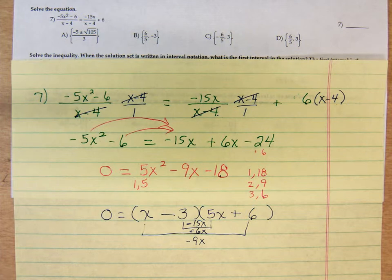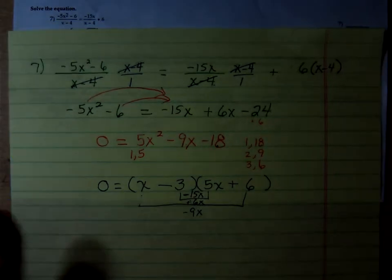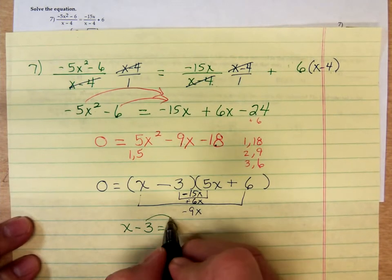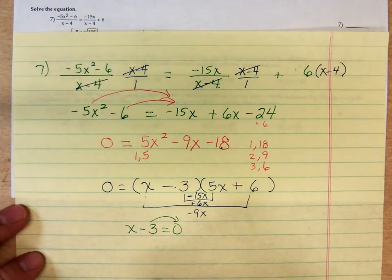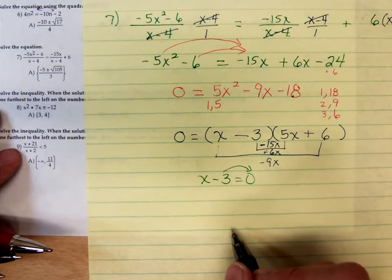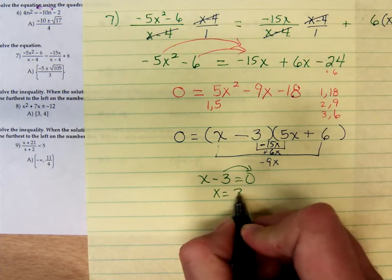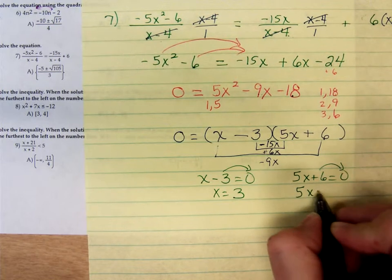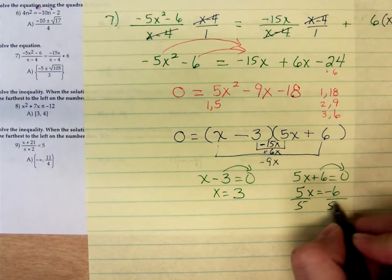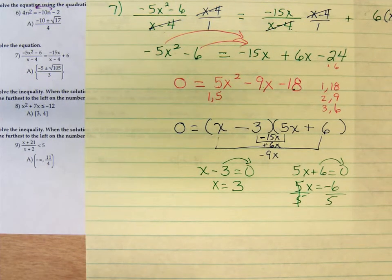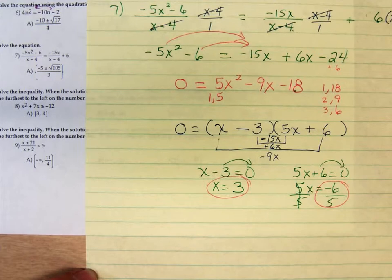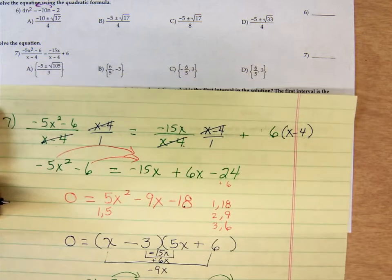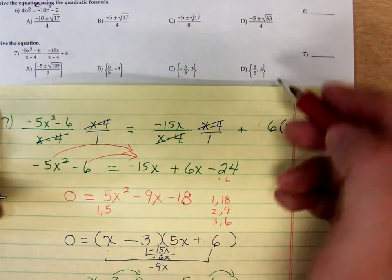Now set each one of the factors to zero. There's nothing wrong with your phone or computer that you're watching this on. The blinking is just because the motion detector didn't detect enough movement in here. So we have x equals 3 and x equals negative 6 over 5. So 3 and negative 6 over 5. That is C, isn't it?